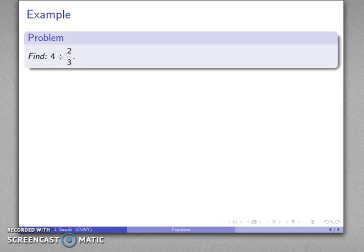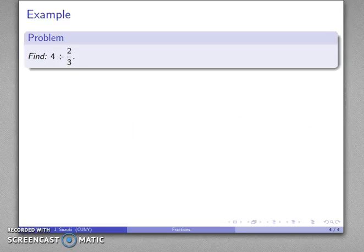What if I'm doing a division like four divided by two thirds? The problem is that I can't really make good sense of what I might mean by two thirds parts, so it doesn't make a lot of sense to talk about this as a partitive division.